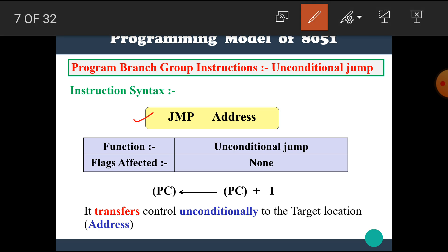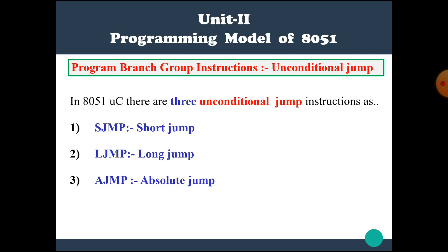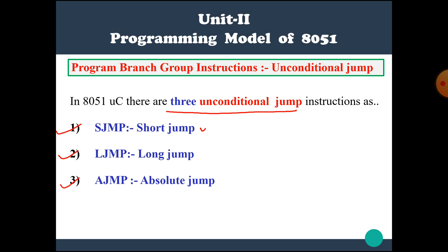The next instruction is jump address. Its function is unconditional jump — it transfers control unconditionally to the target address. In the 8051 microcontroller, there are three unconditional jump instructions: SJMP (short jump), LJMP (long jump), and AJMP (absolute jump).